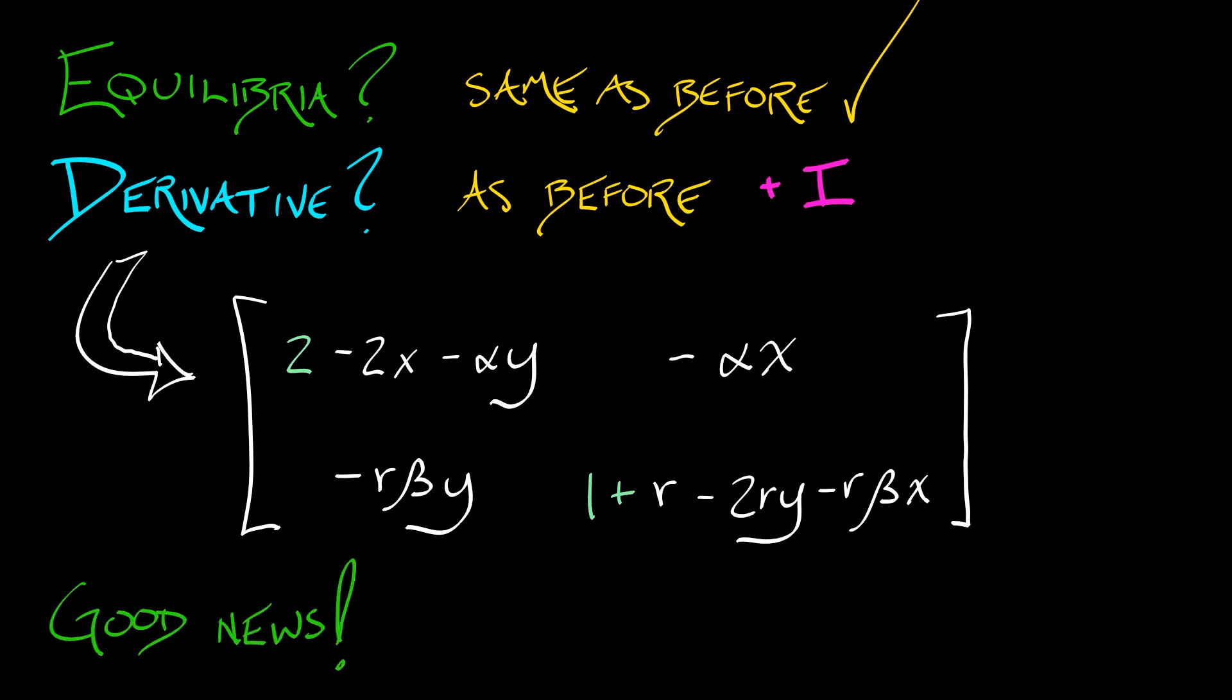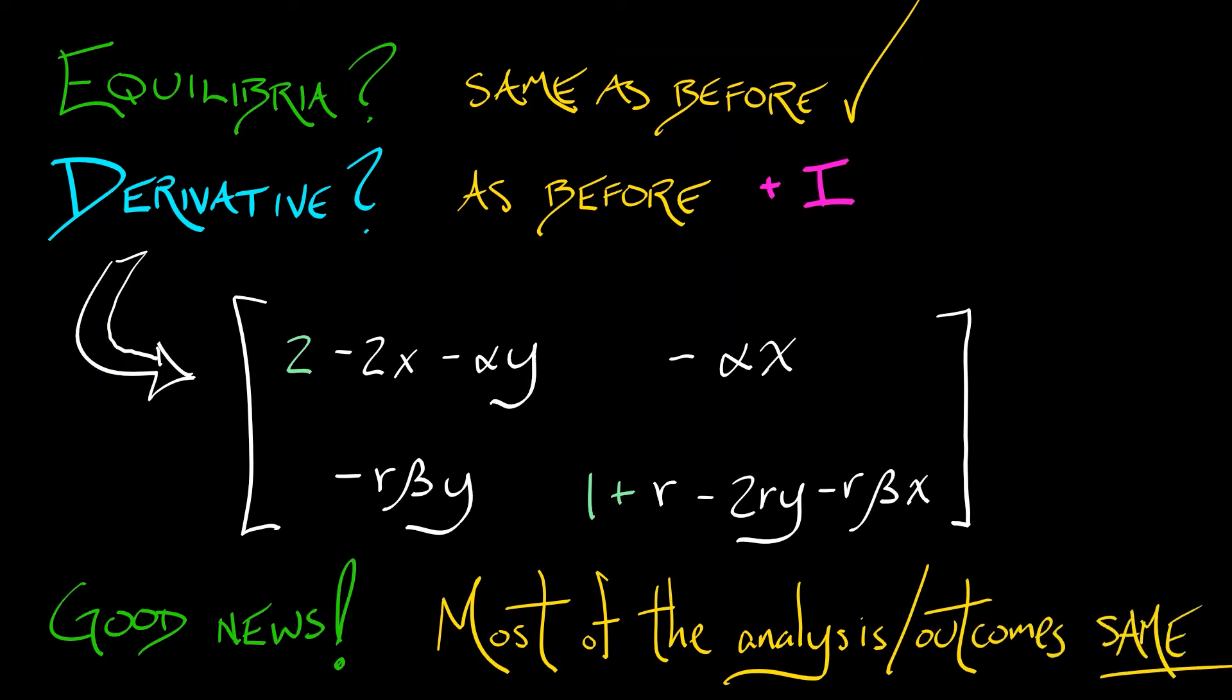The good news is that most of the analysis and the outcomes in this discrete time system are going to be the same. You're just going to be hopping along the continuous flow line solutions that we had before. You still get cooperative solutions, competitive exclusion, all that good kind of stuff.